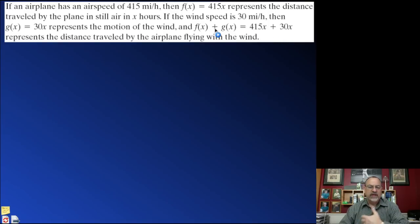Adding those together would give you the distance that the plane could travel when it had this 30 mile an hour tailwind, pushing it in addition to its normal speed.